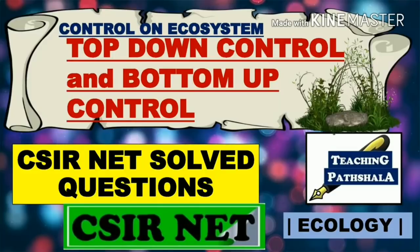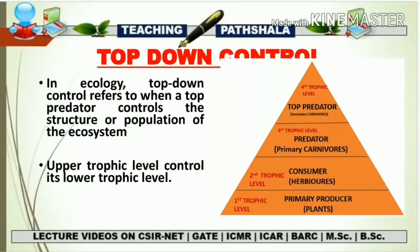In our ecosystem there is a control over a species by some other species, and this keeps everything balanced because some species are born and some die. This balance between death rate and birth rate maintains equilibrium in a perfect ecosystem. There are a total of two types of control: the first one is the top-down control and the second one is the bottom-up control.